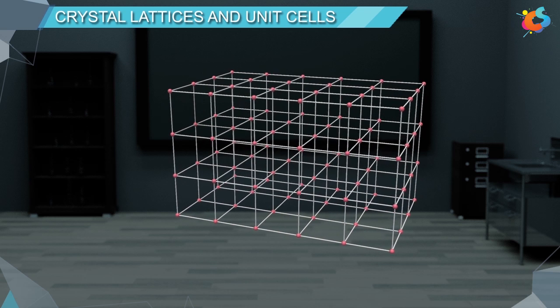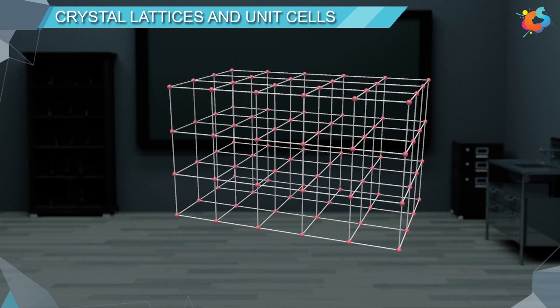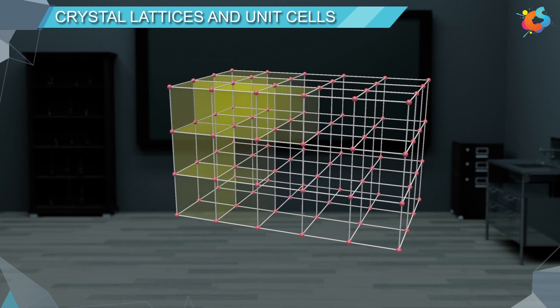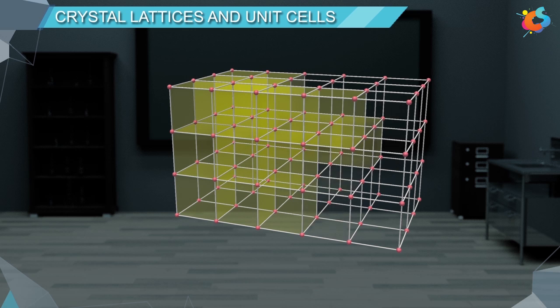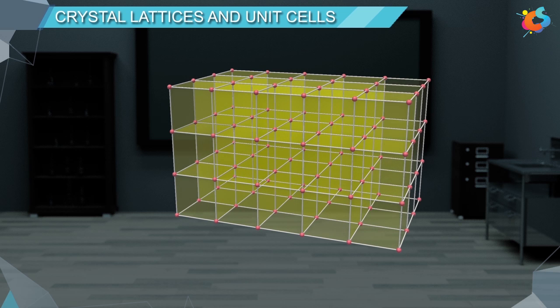Now, if we observe this crystal lattice, we can notice that there is a small group of lattice points that repeats itself to form the entire crystal lattice. This small group is known as a unit cell. Therefore, a unit cell is the smallest portion of a crystal lattice which, when repeated in different directions, generates the entire lattice.